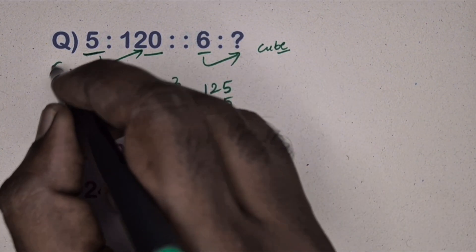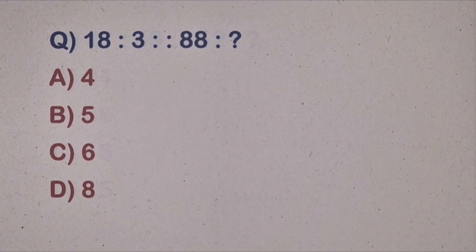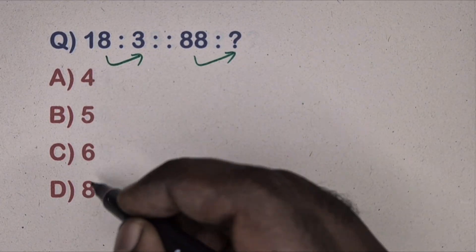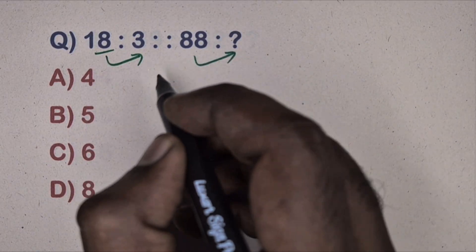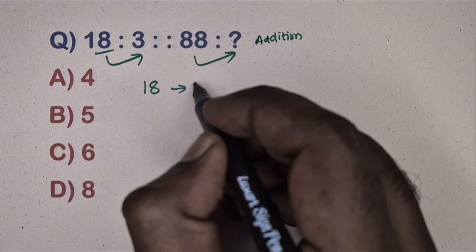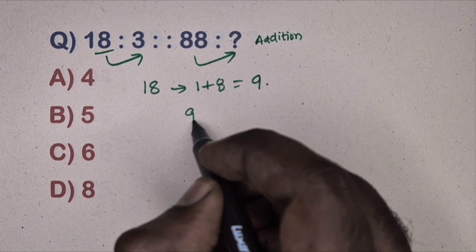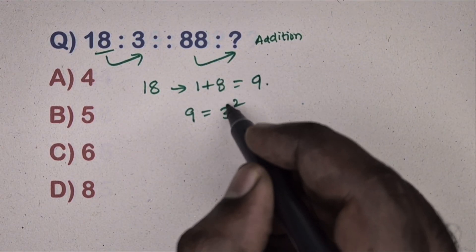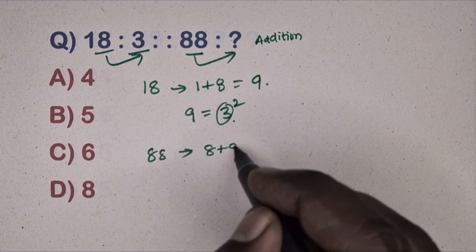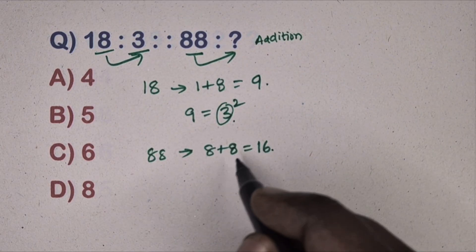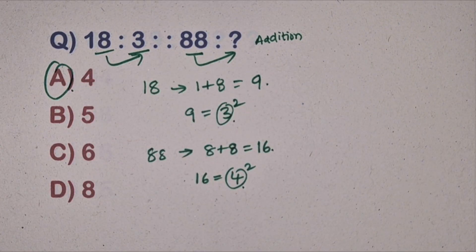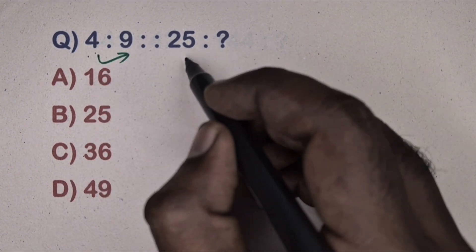Next question: 18 is related to 3, 88 is related to which number? This is the addition method. Take 18, add individual digits to get 9. Write 9 as 3², so the base is 3. Same way, take 88, add digits to get 16. Write 16 as 4², so the base is 4. Option is the correct answer.